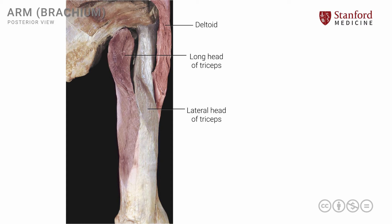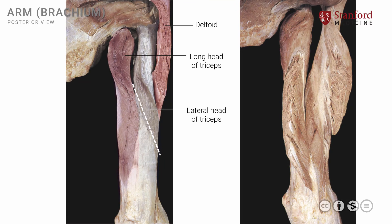These two heads unite and become tendinous as they go into the distal part of the posterior arm. Note that in this view, there is nothing of the medial head that is visible. In order to see the medial head, we need to make a cut as shown here. The result of that would be as seen in the photograph on the right side. If we make the cut and separate these two heads, we can now see the deeper structures. The lateral head has been separated from the long head of the triceps. The medial head of the triceps is now seen in the depths — the medial head is also sometimes called, rightly so, the deep head.